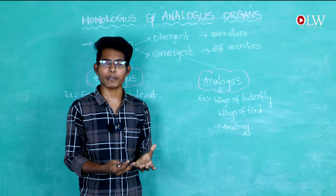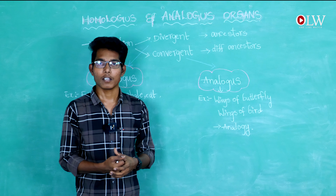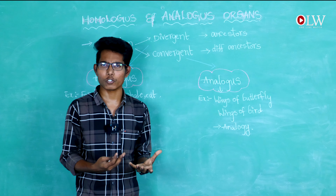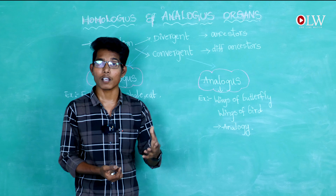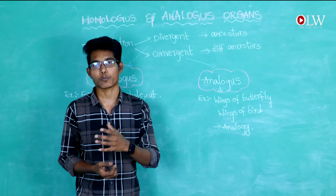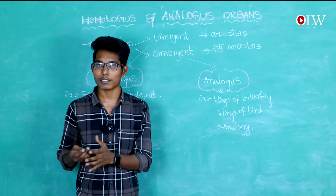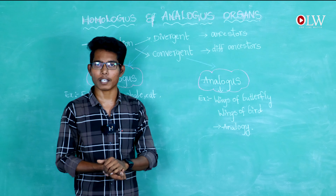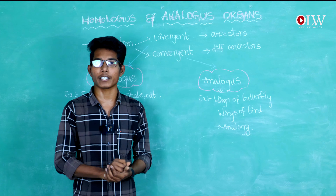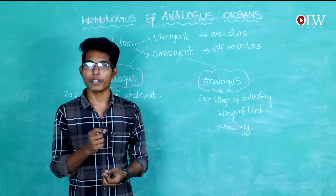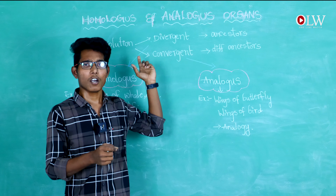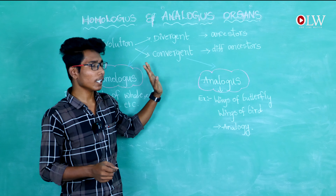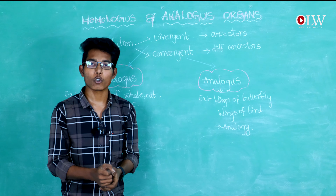Evolution is a gradual change in the occurrence of a species. There is an important difference between homologous and analogous organs. Analogous organs show convergent evolution, which is distinct from the divergent evolution shown by homologous organs.